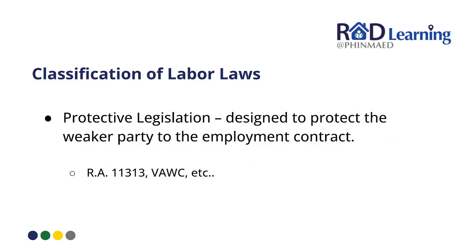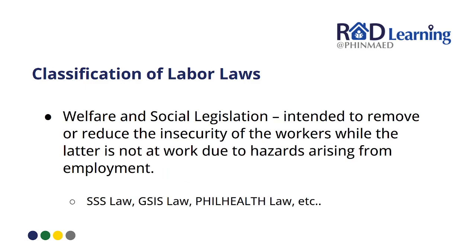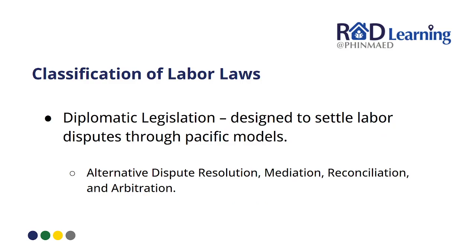The classification of labor laws: first is protective legislation, designed to protect the weaker party to the employment contract — for example, RA 11313, the Safe Spaces Act, and anti-child labor laws. Second is welfare and social legislation, intended to remove or reduce the insecurity of workers due to hazards arising from employment — these are your government-mandated benefits like SSS and GSIS. Third is diplomatic legislation, designed to settle labor disputes — an example is ADR, or Alternative Dispute Resolution: mediation, reconciliation, and arbitration.